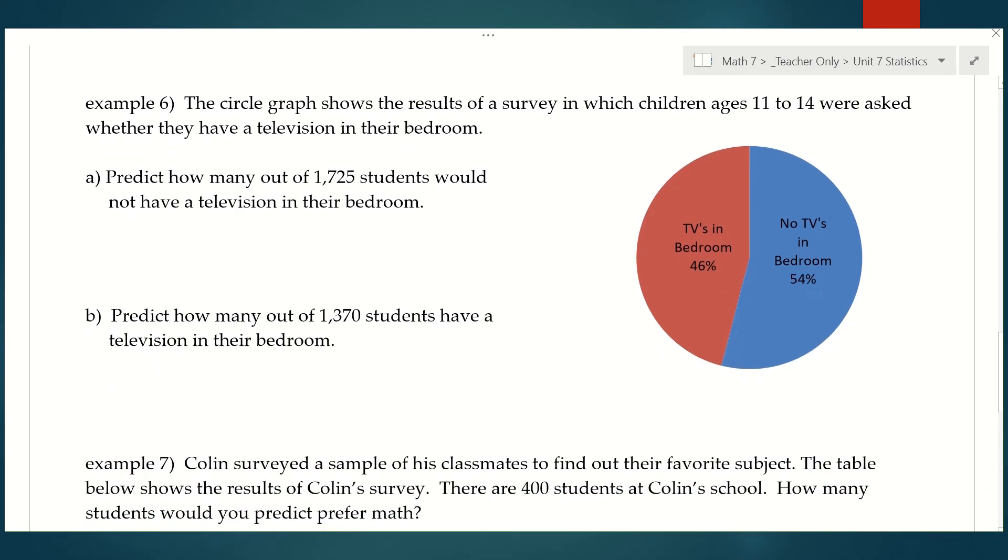Example six. The circle graph shows the results of a survey in which children ages 11 to 14 were asked whether they have a television in their bedroom. You can see from the circle graph here, 46% said they have a TV in their bedroom and 54% said they don't. Notice those two percentages add up to be 100% because that would be the entire circle. We need to predict how many out of 1,725 students would not have a television in their bedroom.